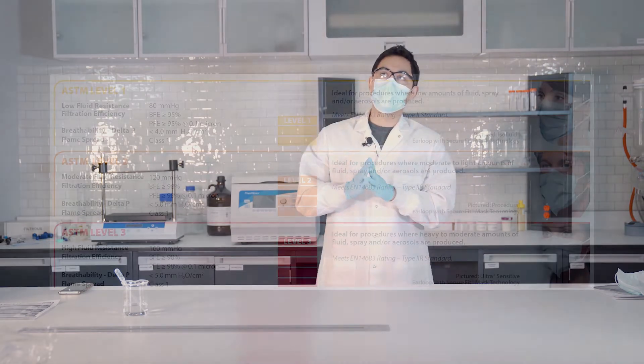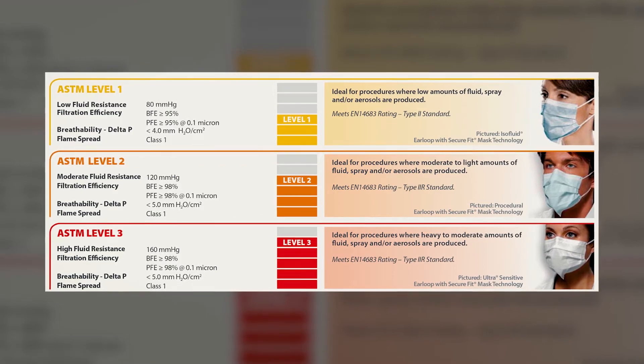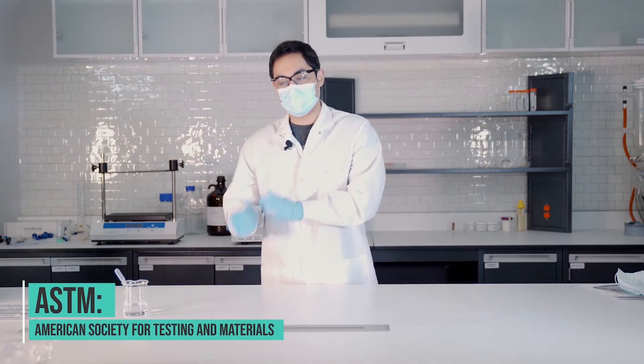And then you're gonna see different levels of masks, sometimes level 1, level 2, level 3. This is an ASTM level. They basically differentiate between the different types of protection that they offer.